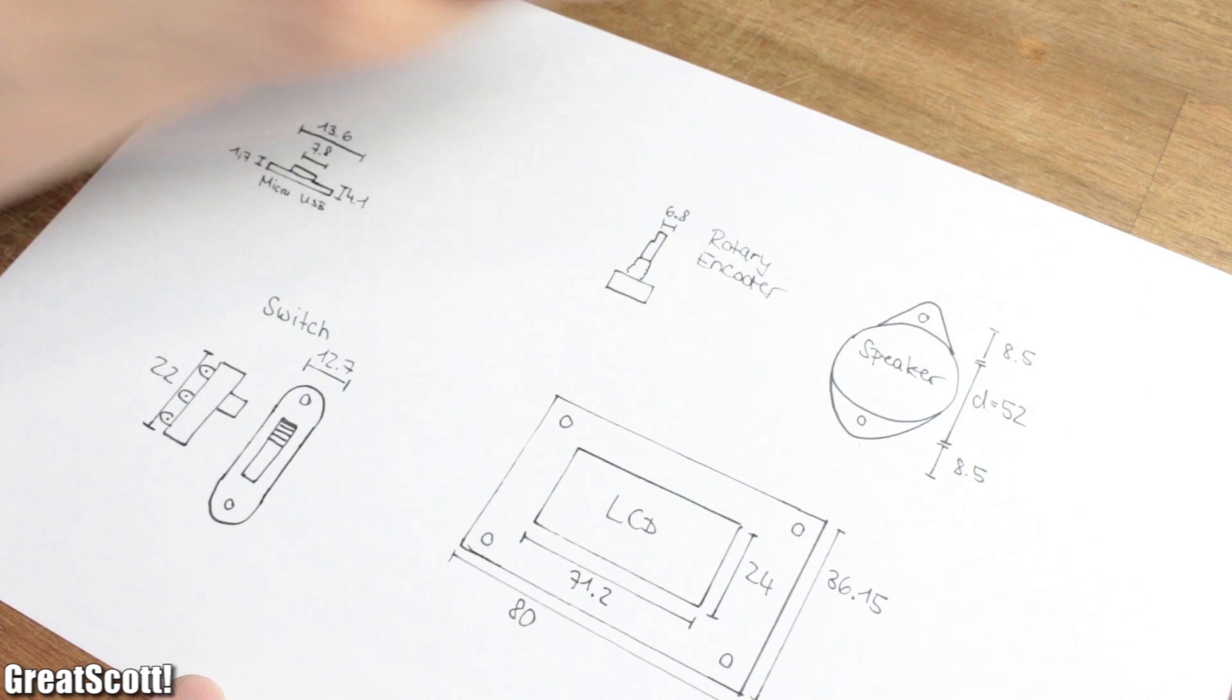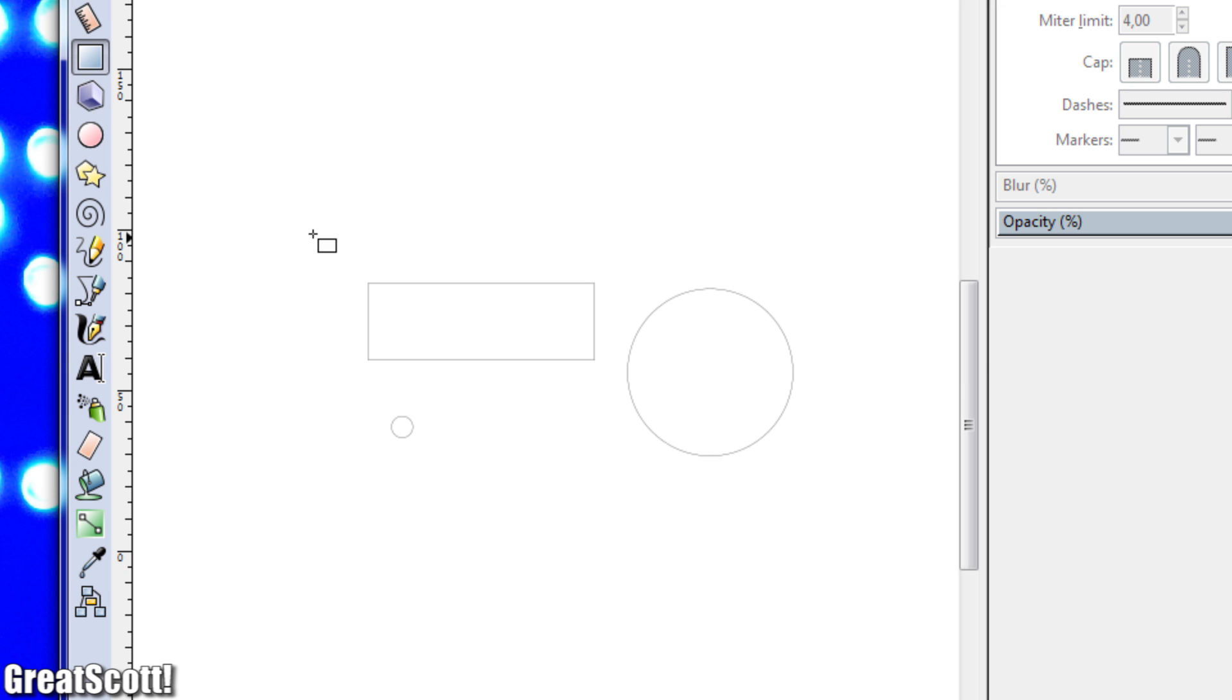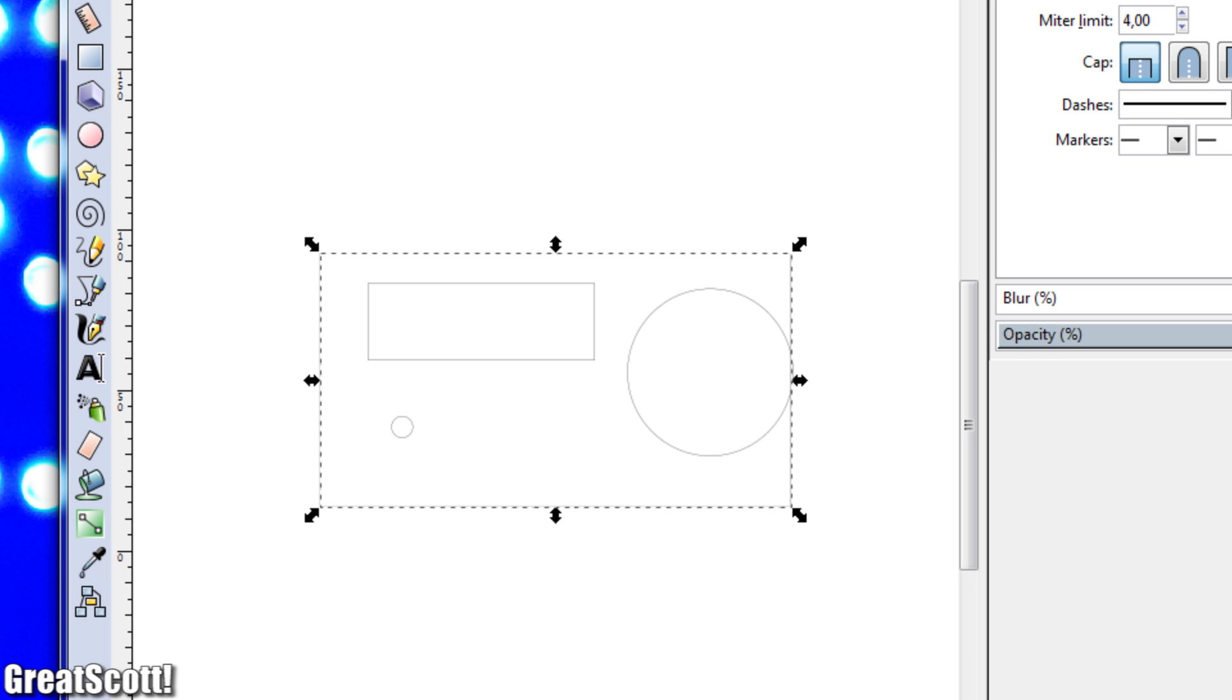I used those and the software Inkscape to evenly position the cutouts for the speaker, LCD and rotary encoder onto the front piece. After creating a rectangle around those I achieved dimensions of 148 by 79 mm which seemed acceptable.